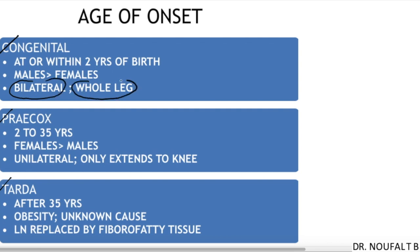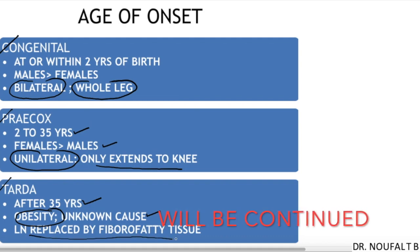In lymphedema praecox, it occurs between 2 and 35 years of age; females are affected more commonly than males, it is usually unilateral and extends only up to the knee level. In lymphedema tarda, it occurs after 35 years of age; obesity is one of the proposed causes and there are several unknown etiologies. In this type, lymph nodes are replaced by fibro-fatty tissue.